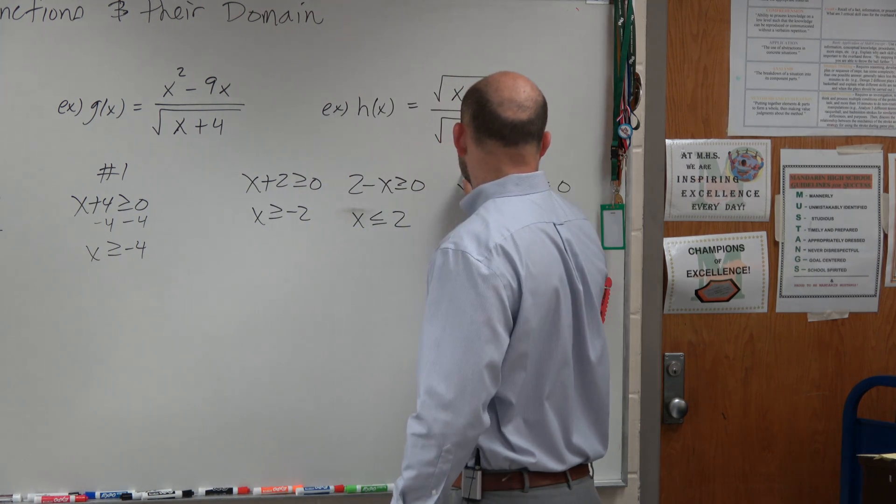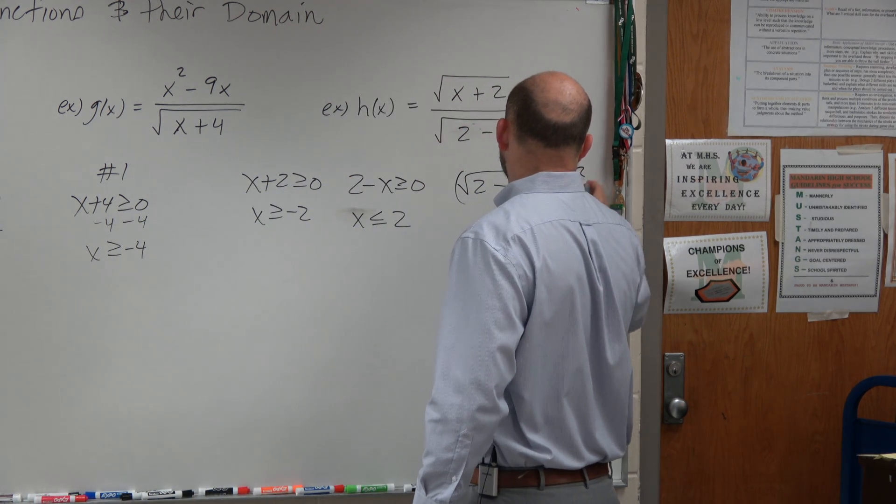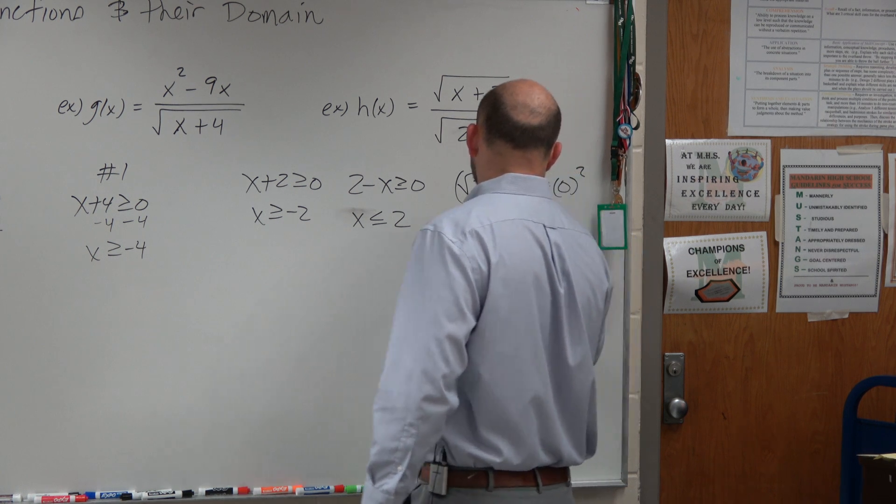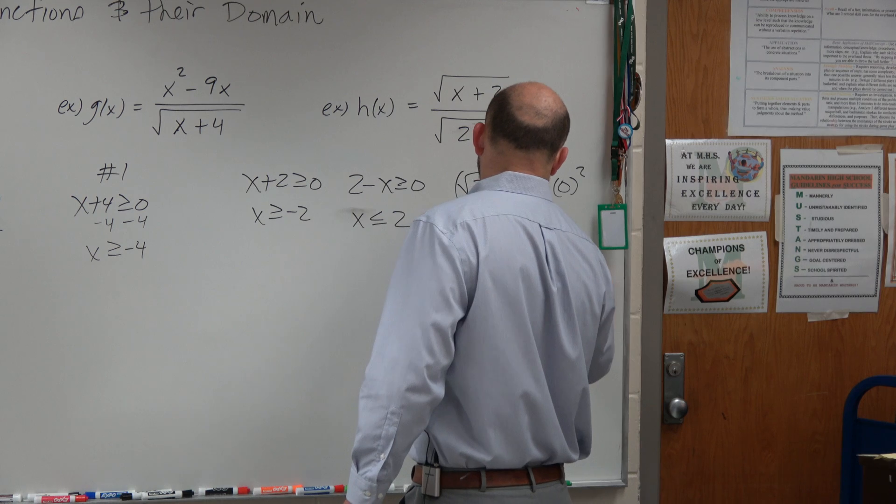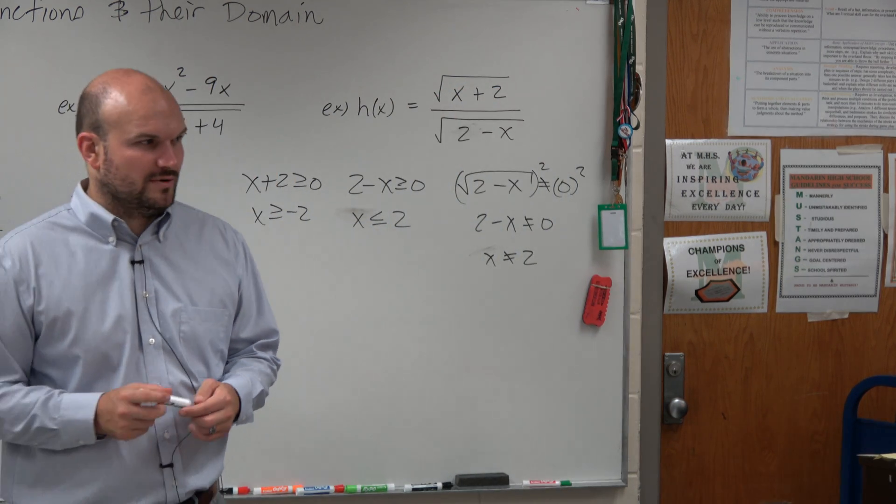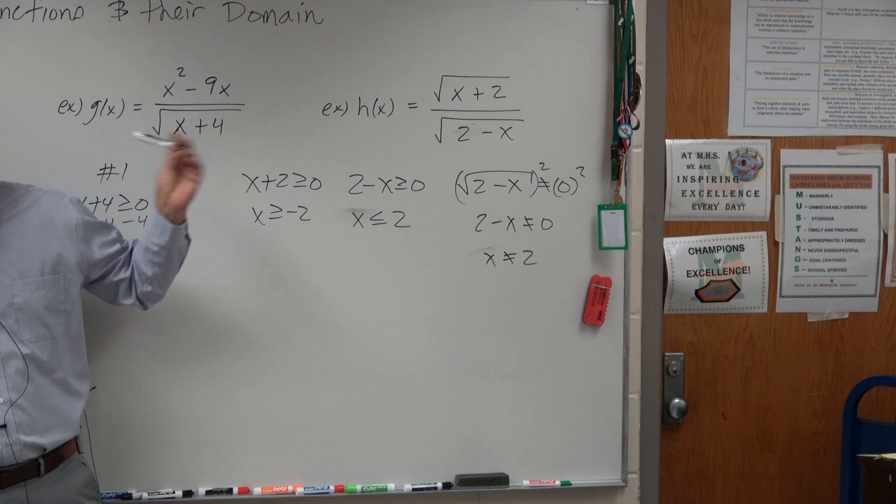and then here you're going to square both sides. 2 minus x cannot equal 0, so x cannot equal 2. I'm kind of skipping my steps a little bit, but does anybody have any questions on how I got to each one? I'll be more than happy to go back.